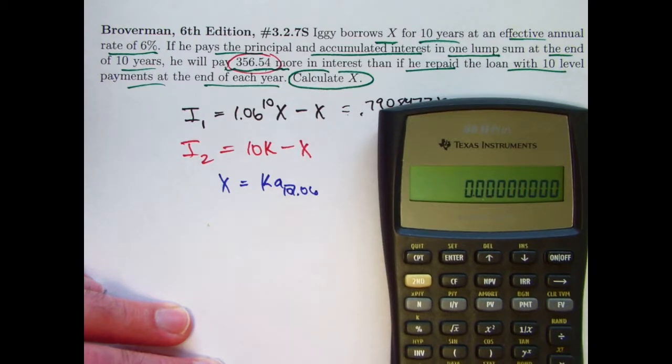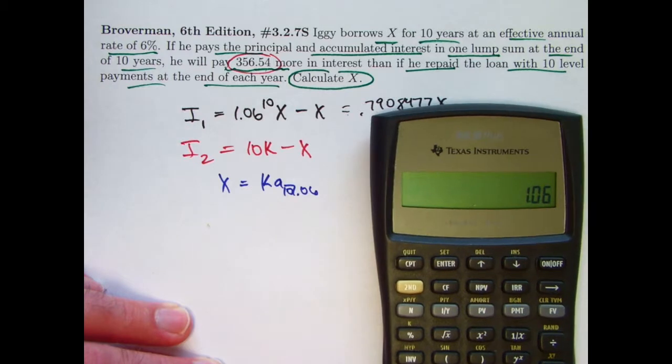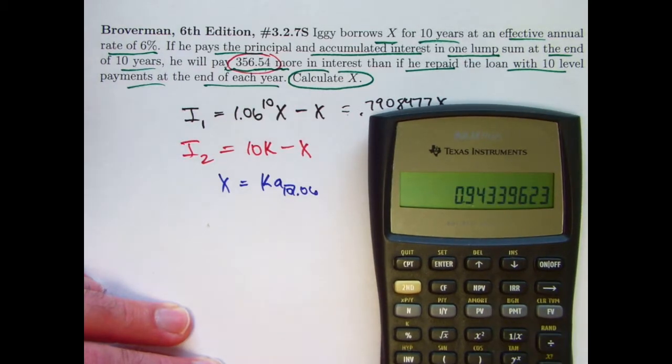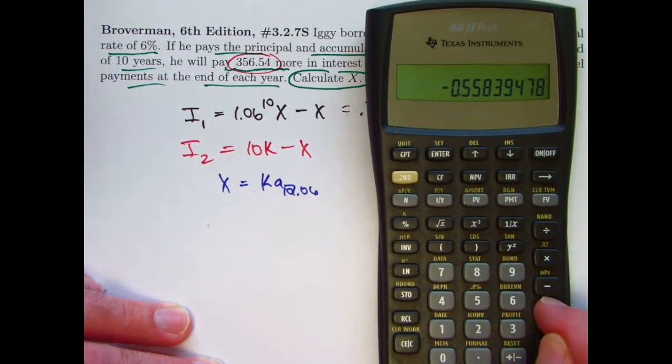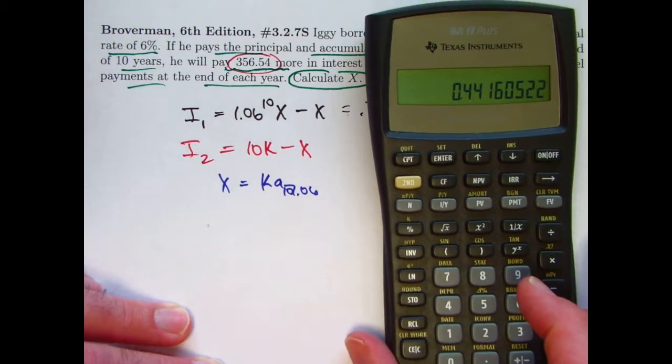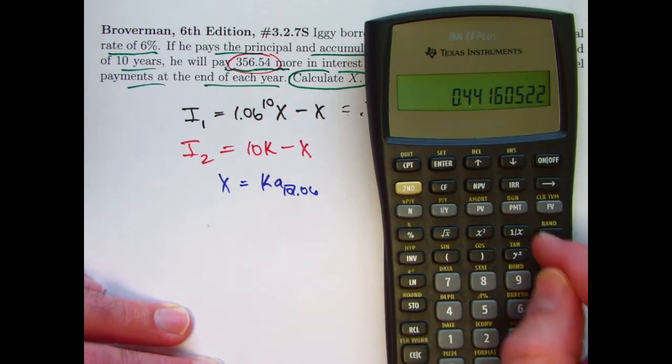You've got to take I plus 1. There's 1.06. That's 1 plus I. Take its reciprocal. That is V, the discount factor. Raise that to the 10th power. Subtract that from 1. So, on this calculator, press the negative sign and plus 1. Then divide that number by the interest rate, 0.06.